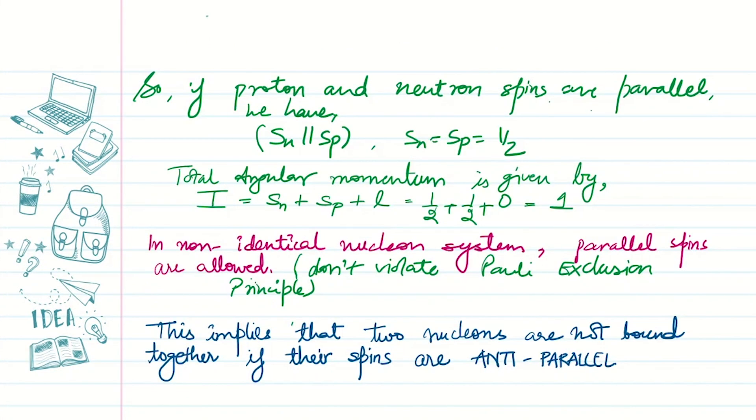If proton and neutron spins are parallel, we have S_n parallel to S_p, and both have values of 1/2. The total angular momentum is given by the sum of S_n (the spin of the neutron), S_p (the spin of the proton),